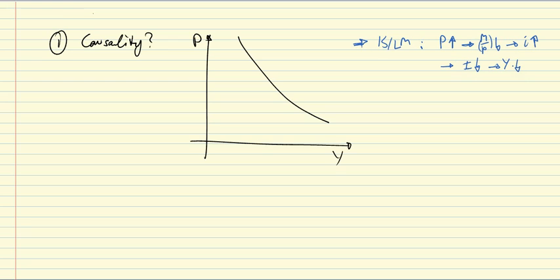Y falls through the multiplier process. So causality goes from P to Y, and we can put that in here with a big green arrow. Causality goes from P to Y through the financial market, through the monetary transmission channel here. Output reacts to price changes.